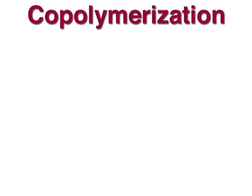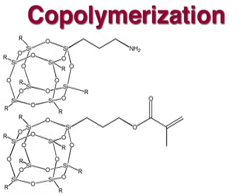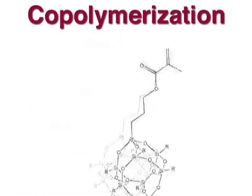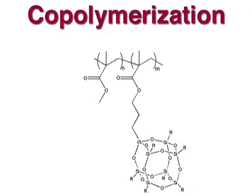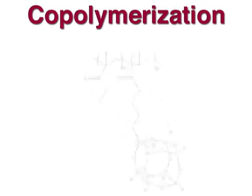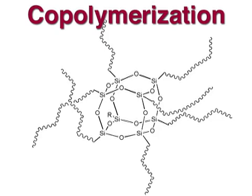By incorporating reactive groups, POSS can be used for copolymerization. Whether you want to use a condensation reaction to end-cap or graft POSS to an existing polymer, or use POSS as a co-monomer in an addition reaction, attaching POSS to your polymer leads to reinforcement through bottom-up self-assembly. When more than one of the R groups is made reactive, POSS can be used as a cross-linker or a dendrimer core.